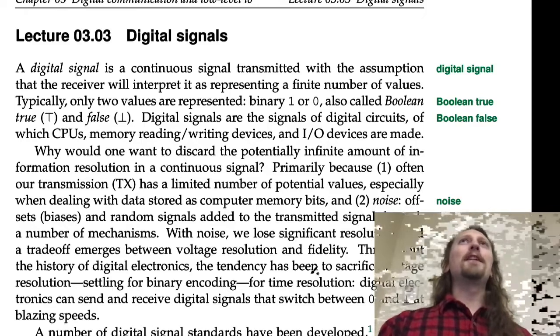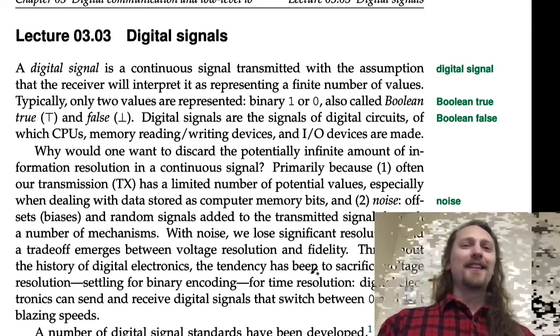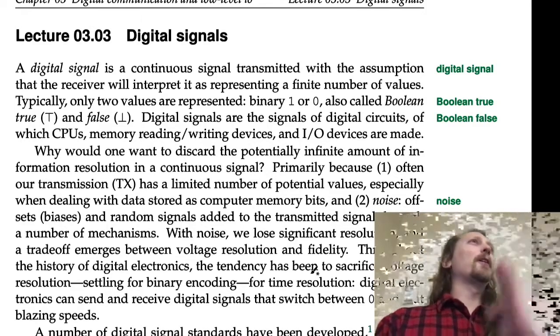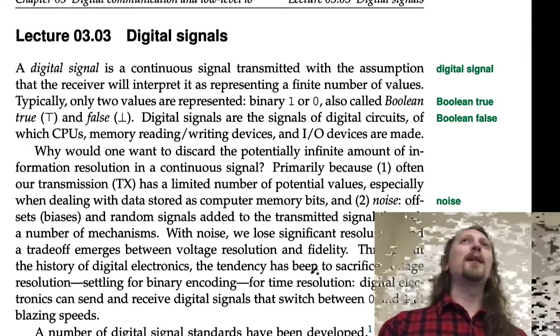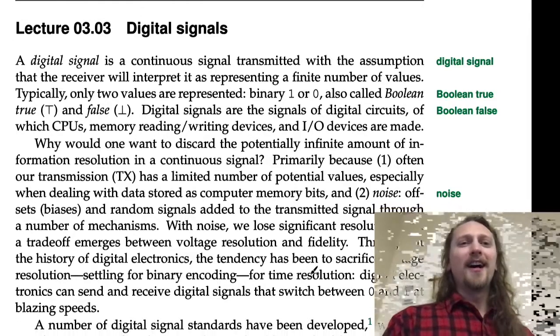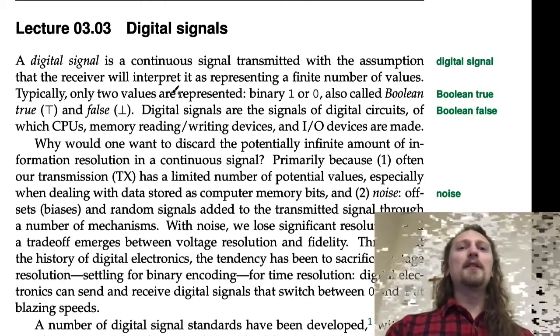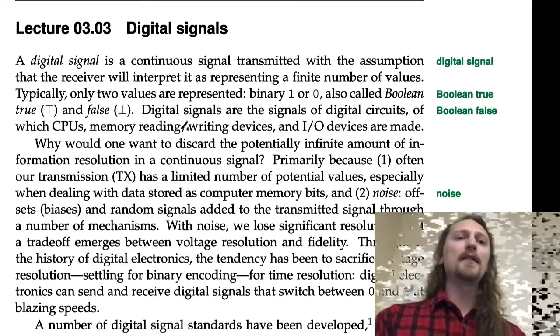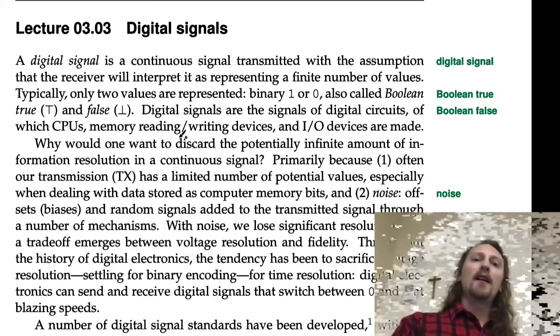Okay, lecture 3.3: Digital Signals. These are the things we're communicating around, so probably talk about them for a minute. A digital signal is a continuous signal transmitted with the assumption that the receiver will interpret it as representing a finite number of values.